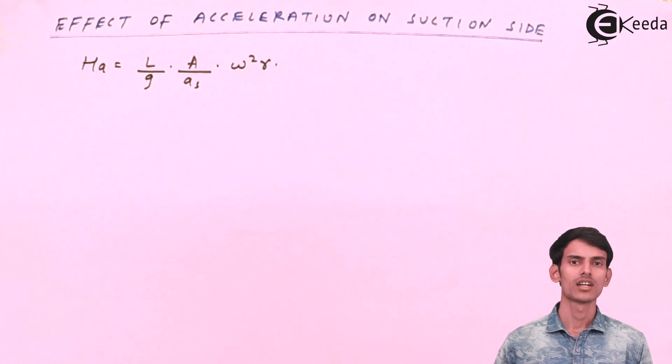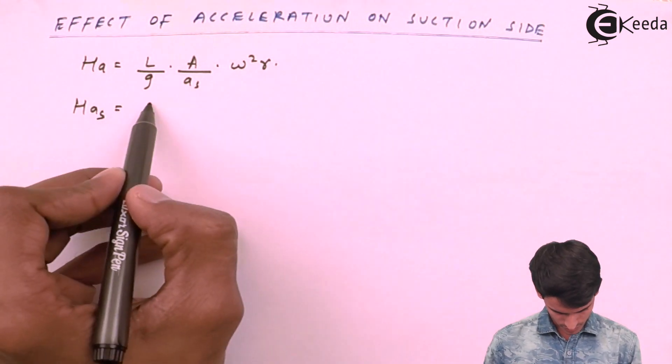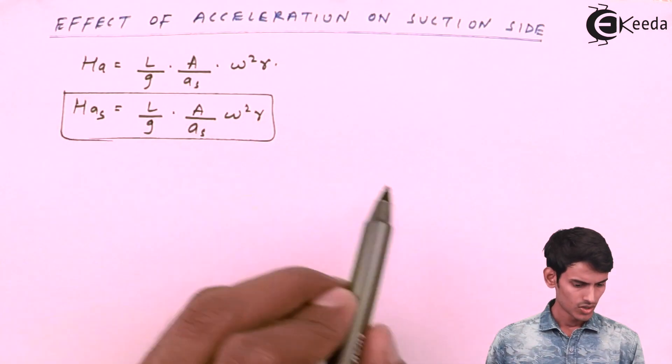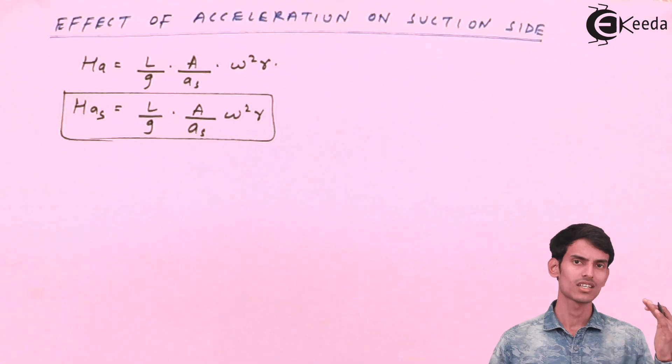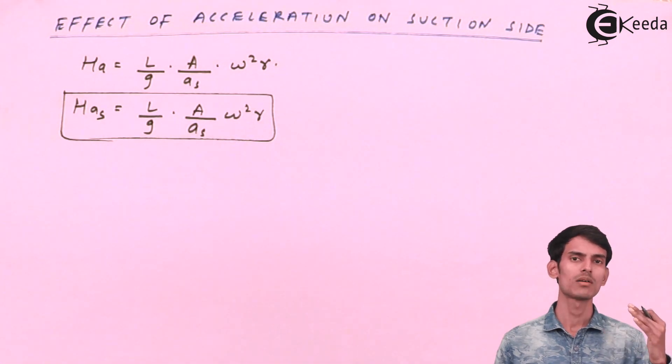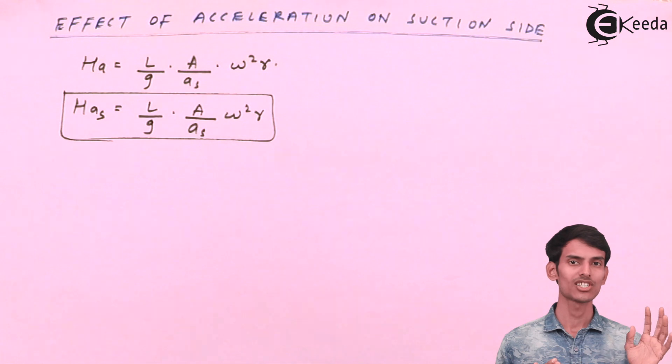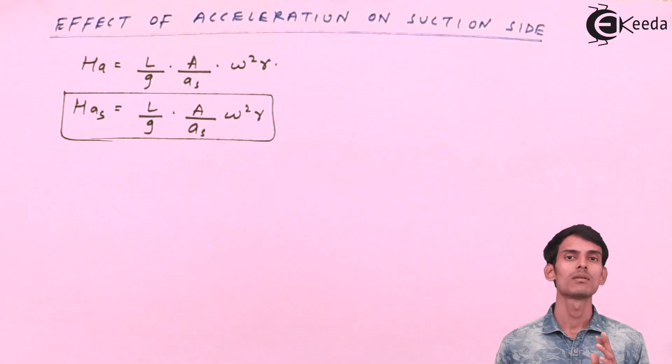So this is the acceleration head. Acceleration head at the suction side. Now since the water is accelerating in the suction pipe, there is HS that is the height through which it has to be pumped. And since it is accelerating, so the total vacuum that it has to create is nothing but HS plus HAS. So that is the total vacuum that the pump has to create so that the water comes inside the pump.